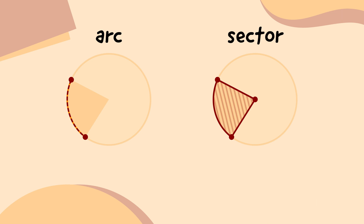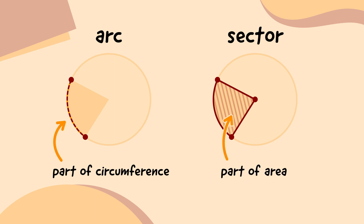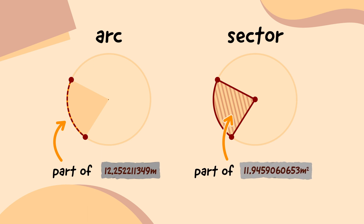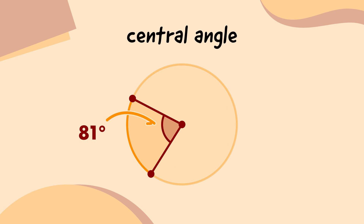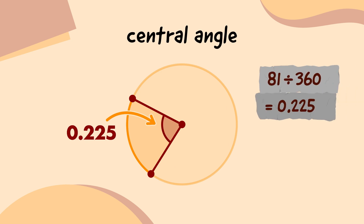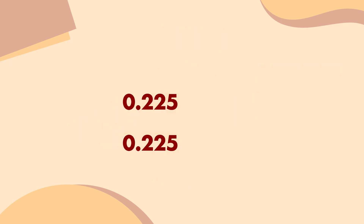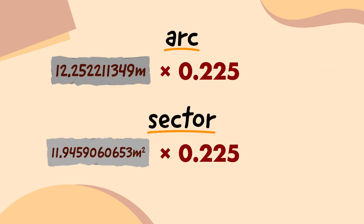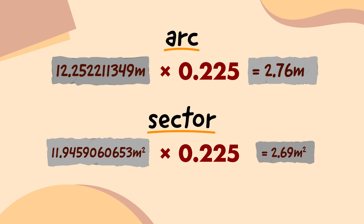So I'm going to quickly remind myself. The arc is part of the circle's circumference, and the sector is part of the circle's area, so we need to work out the full circumference and area first. Then, we work out how big the portion is by measuring the central angle of the portion and dividing it by 360. Finally, we multiply the answer by the circumference to get the arc length, and by the area to get the sector area.